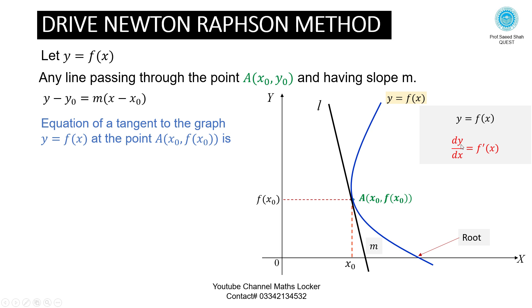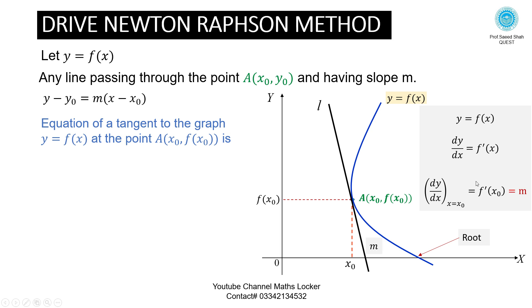Now differentiate: dy/dx = f'(x). At point A where x = x₀, dy/dx = f'(x₀). This derivative value is the slope m. So we can replace m by f'(x₀).